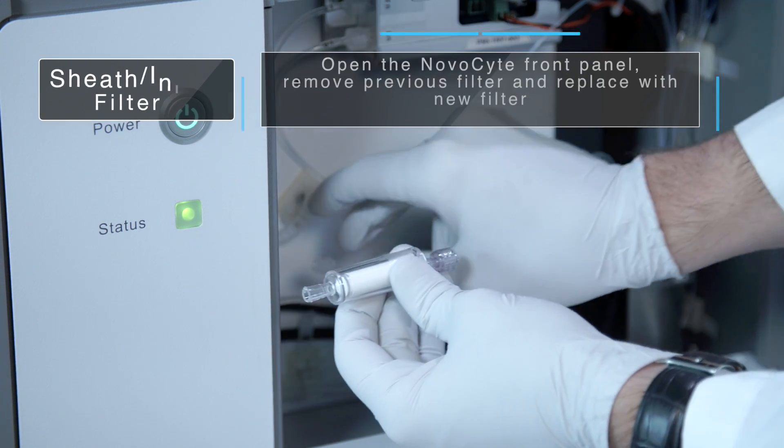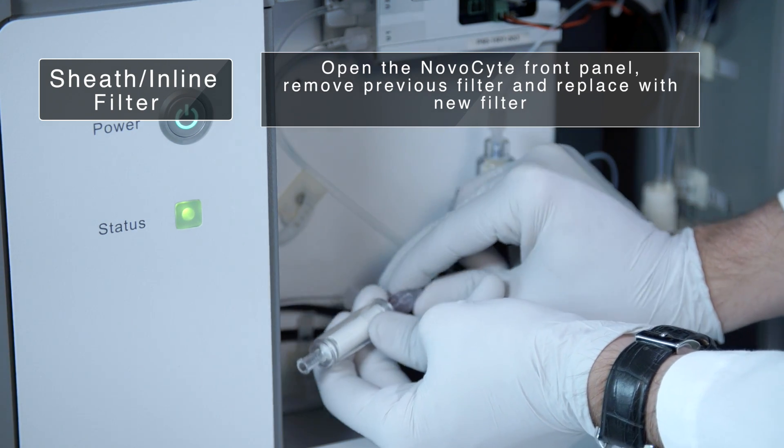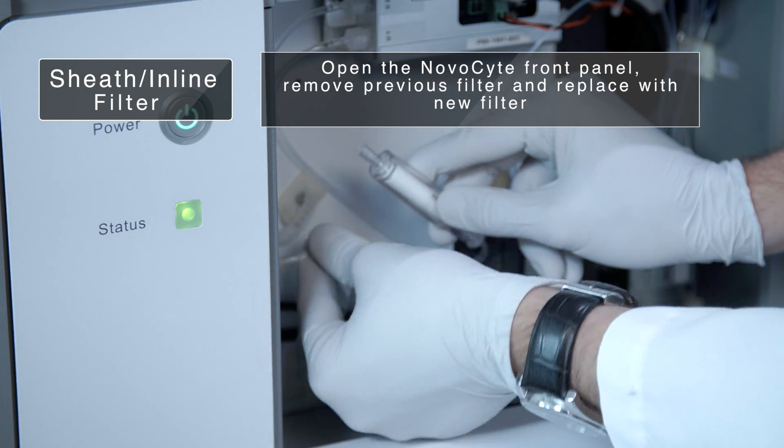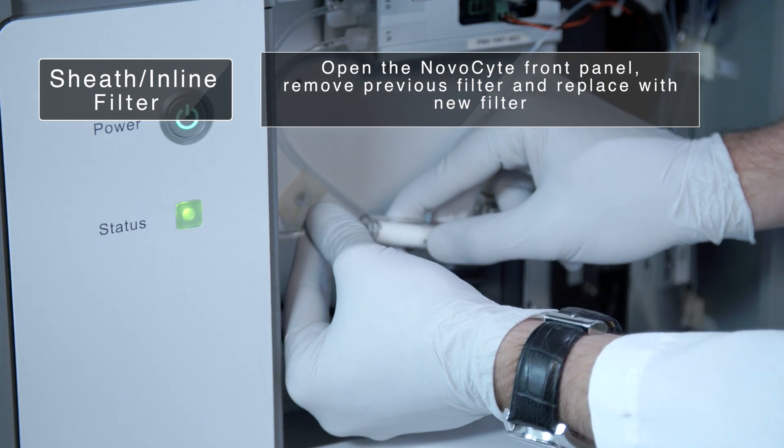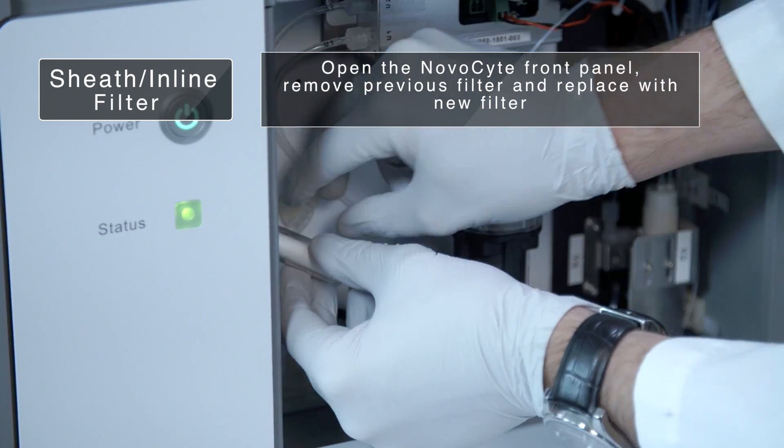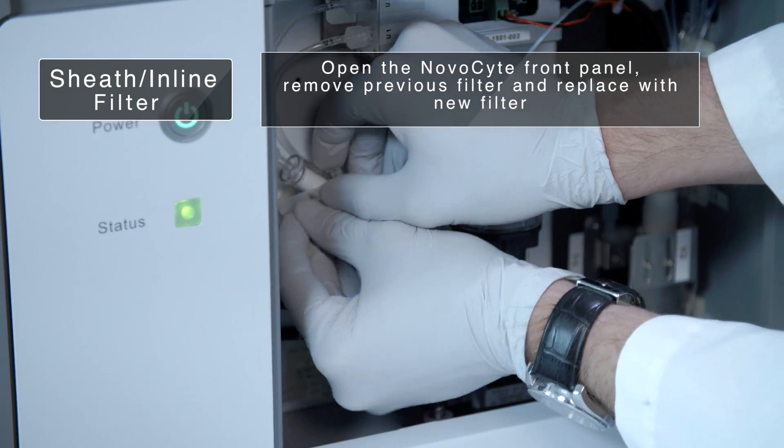The sheath inline filter is changed by following the directions on the screen, essentially unscrewing the two connectors, replacing the filter with a new one, and attaching the tubes to both ends as it was originally.